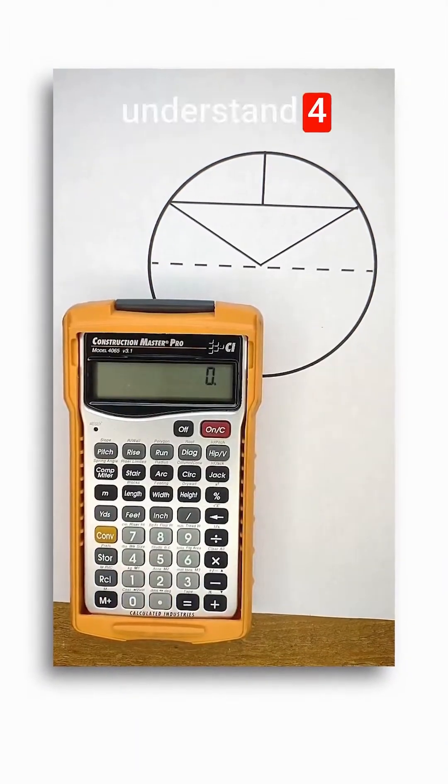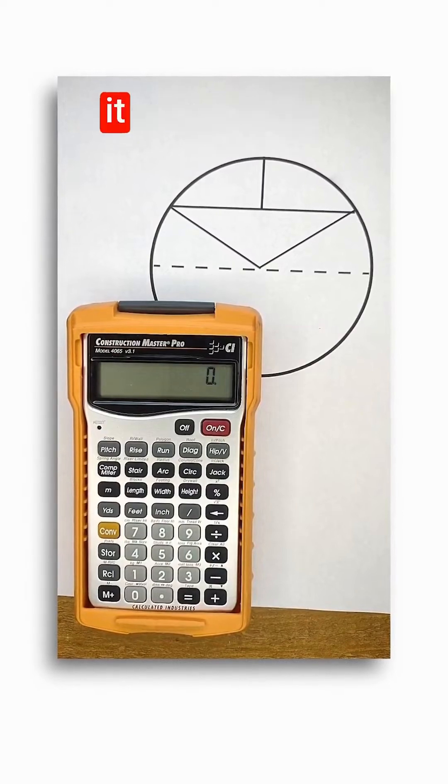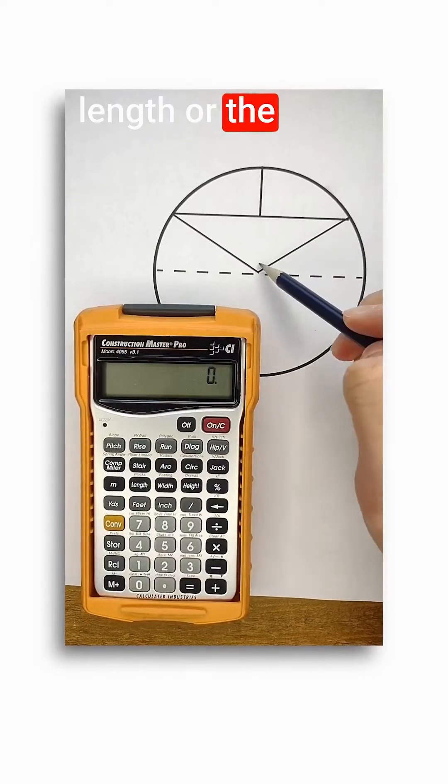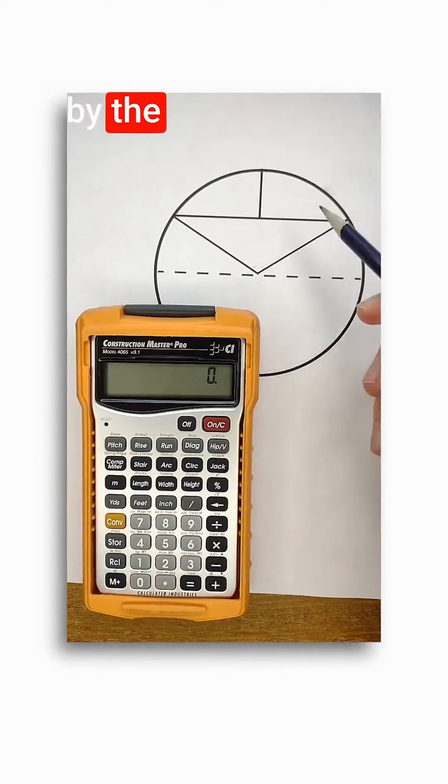The Construction Master Pro can understand four measurements about a circle, but it only needs to know two to solve for everything else. First, you could tell it the arc length or the angle measurement formed by the central angle.